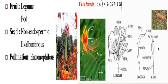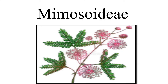Floral formula: since this flower is zygomorphic and bisexual — calyx 5, gamosepalous; corolla 5; androecium 10; gynoecium with superior ovary, unilocular. Next subfamily of Fabaceae is Mimosoideae.